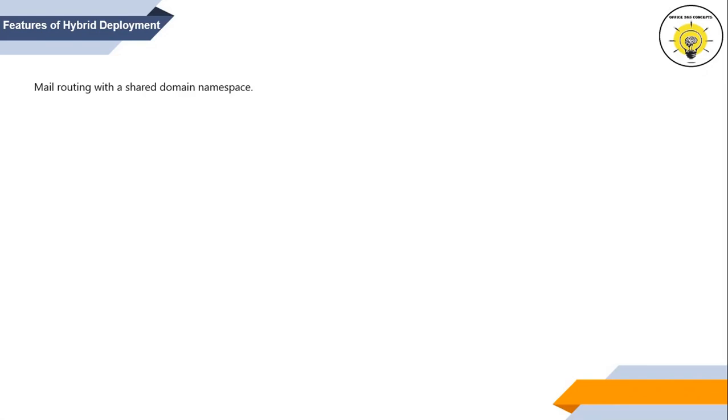On-premise users and Office 365 users can use the same domain namespace for their email addresses. For example, if an on-premise organization is using the office365concepts.com domain, they will verify and add the same domain in Office 365 as a prerequisite. On-premise users, migrated users, and cloud-hosted users will all use the @office365concepts.com SMTP domain. Additionally, cloud-hosted users and migrated users will be part of a single unified Global Address List.